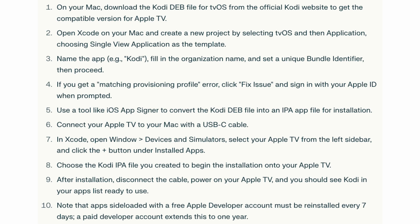In Xcode, open Windows > Devices & Simulators. Select your Apple TV from the left sidebar and then click the plus icon under Installed Apps. Choose the Kodi IPA file you created to begin the installation onto your Apple TV.